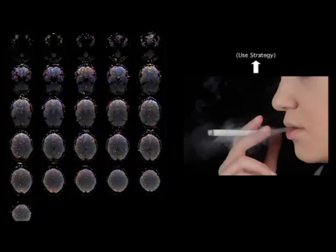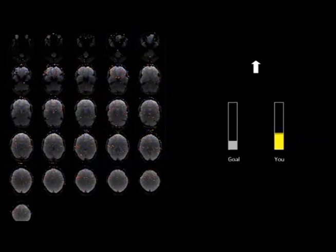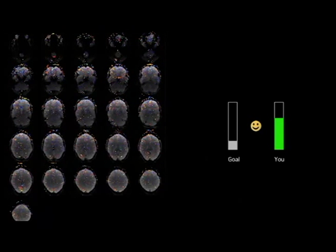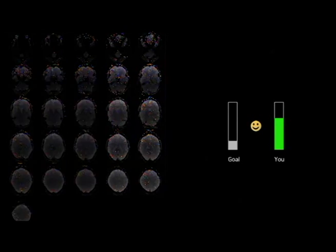On the left is the participant's brain map, which is monitored by the experimenter but is not displayed to the participant. On the right is what the participant sees. Participants then see a display of how their LIFC responded when they used a given thinking strategy. If their level of brain activity exceeds a goal set by the experimenter, the brain activity bar turns green, indicating that the strategy was a success.